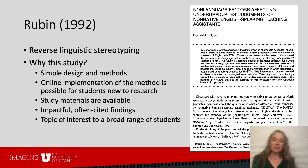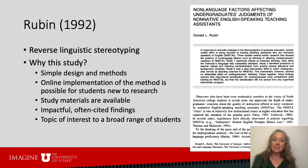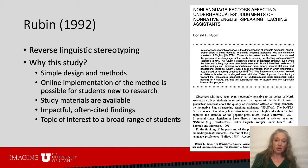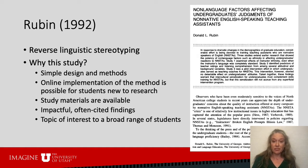The Rubin 1992 reverse linguistic stereotyping study demonstrated that native English speaking undergraduate students score higher on a listening comprehension test after hearing a recorded lecture accompanied by a photo of a speaker they perceive to be white or Caucasian, rather than hearing that same exact recording accompanied by a photo of a speaker they perceive to be Asian-looking. It's a classic example of how listeners impose their biases on the perception of speech, helpfully complicating our understanding of speech perception and intelligibility.